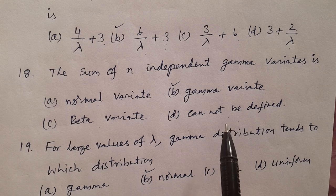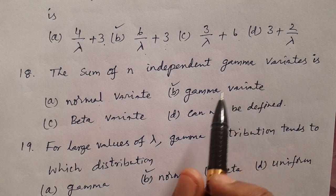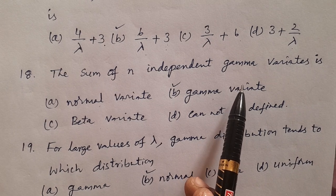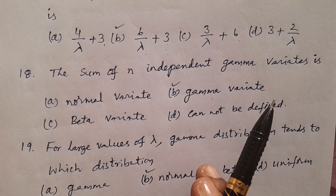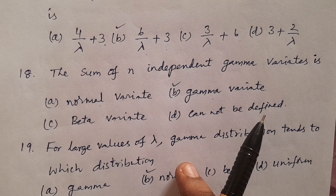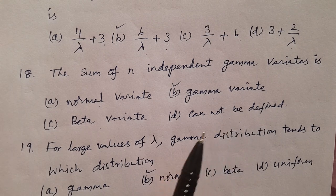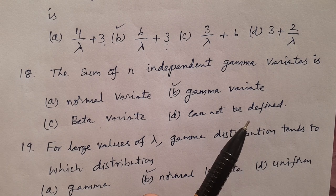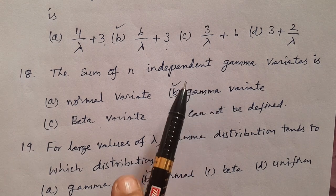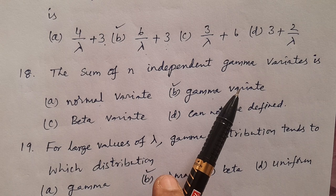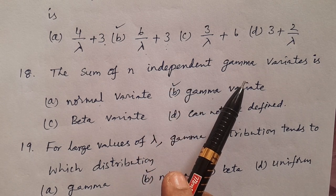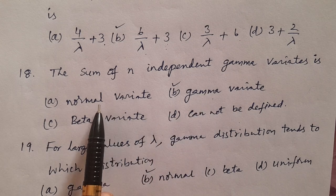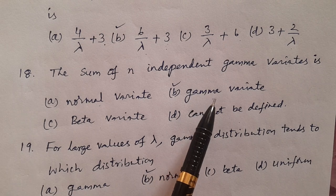In Telugu: The sum of n independent gamma variates — generally 99% of the time the result belongs to the same distribution. For gamma distribution, adding independent gamma variates gives another gamma variate — the additive property is satisfied. Therefore the answer is B — gamma variate.